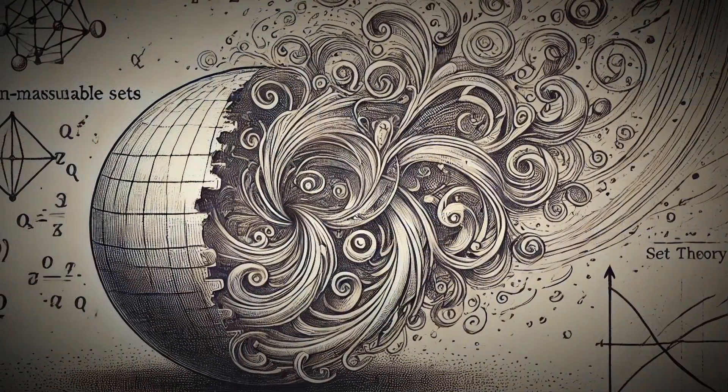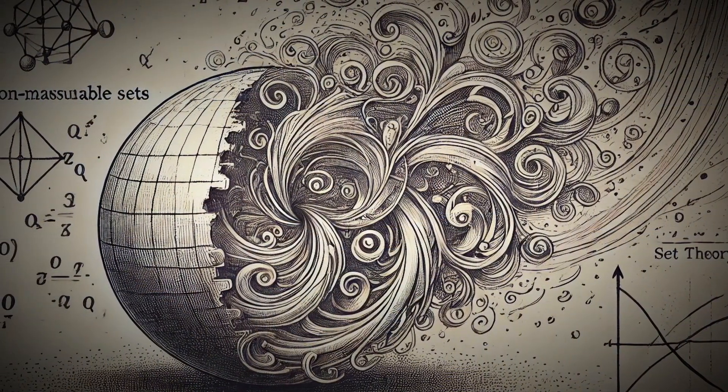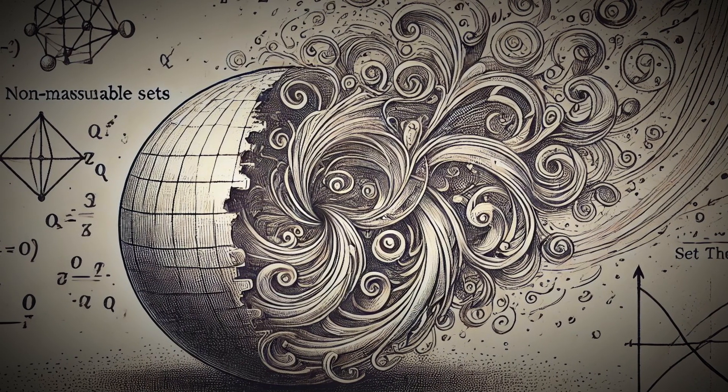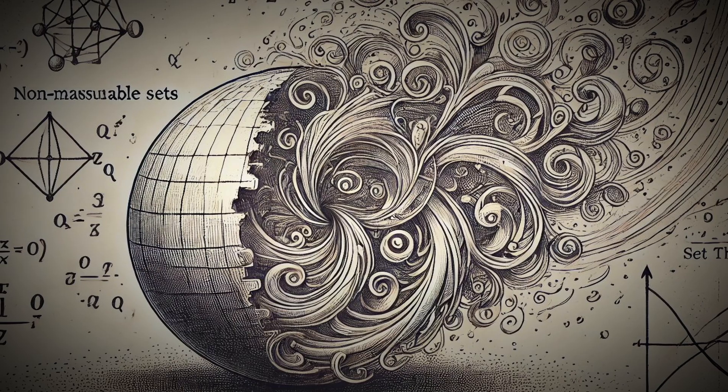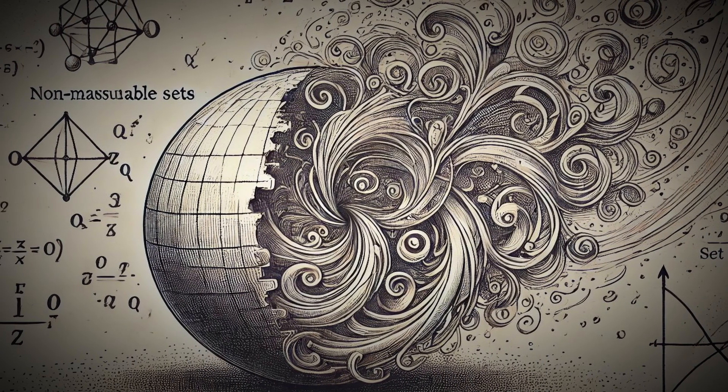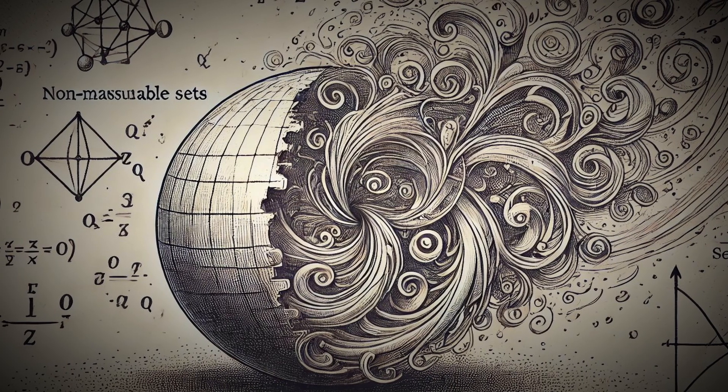So how is it even possible? The Banach-Tarski paradox uses principles from set theory, which is a branch of mathematics that deals with the study of collections of objects called sets. In the world of sets, objects can behave very differently from what we're used to in the real world.